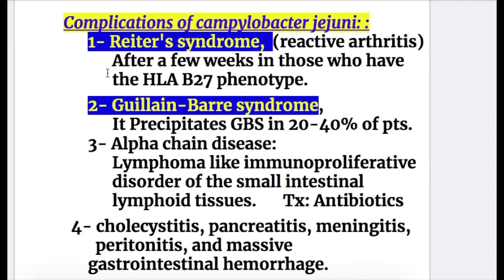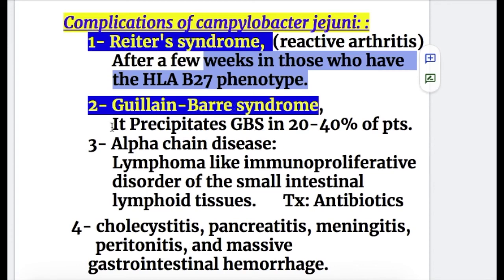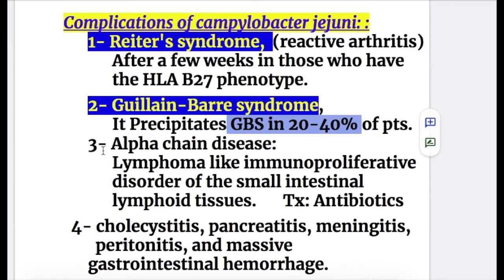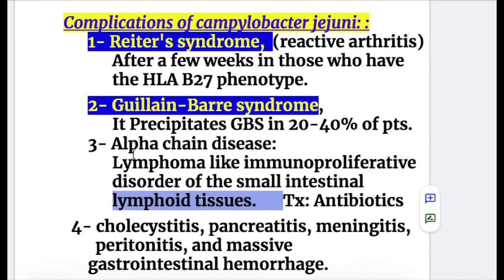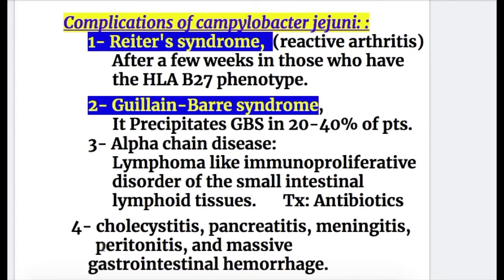Complications of Campylobacter jejuni: number one, Reiter's syndrome — reactive arthritis developing after a few weeks in those with HLA-B27 phenotype. Number two, Guillain-Barré syndrome — Campylobacter infection precipitates Guillain-Barré syndrome in 20 to 40% of patients. Number three, alpha chain disease — a lymphoma-like immunoproliferative disorder of the small intestinal lymphoid tissues that responds to antibiotics. Number four, it may also cause cholecystitis, pancreatitis, meningitis, peritonitis, and massive gastrointestinal hemorrhage.